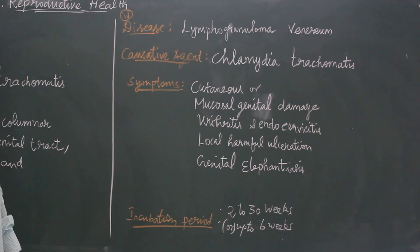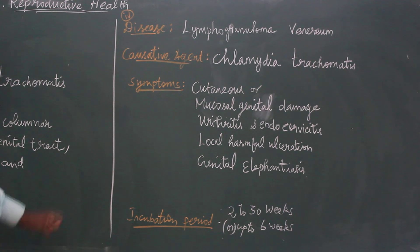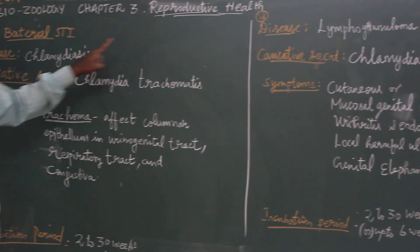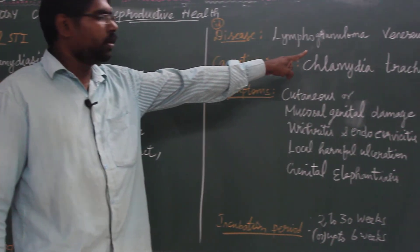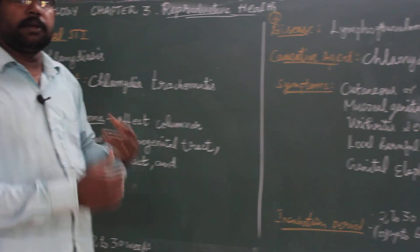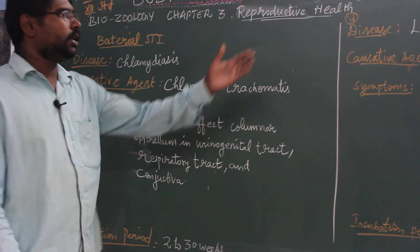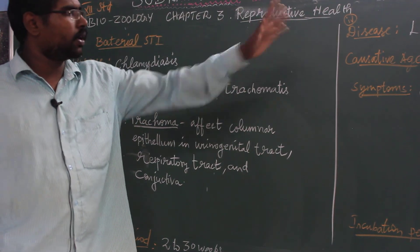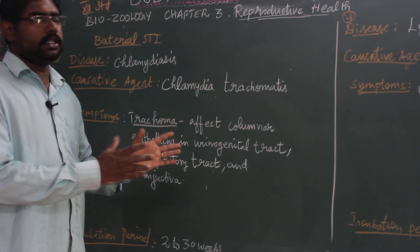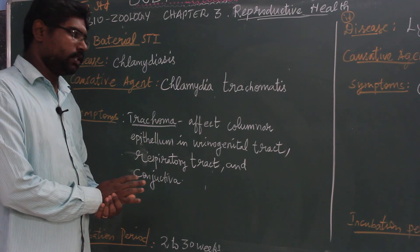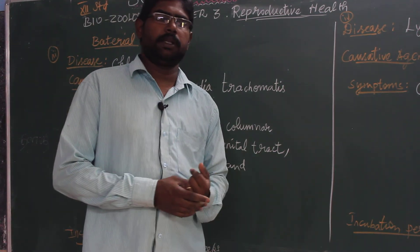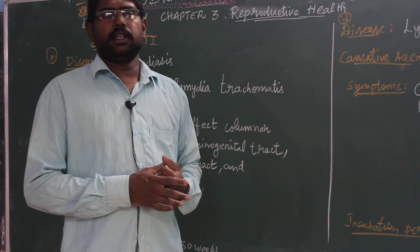So in bacterial sexually transmitted infections, we have covered two bacterial infections: chlamydiasis and lymphogranuloma venereum. Lymphogranuloma venereum affects the lymph glands and lymph nodes in the tract. In our next video, we will see viral STIs. Thank you.